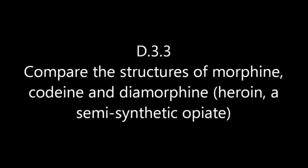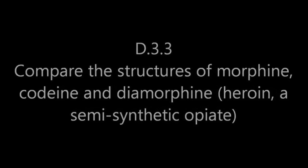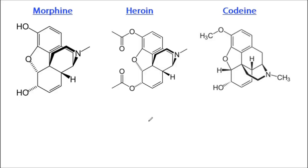You're not expected to learn these three structures — they're in the data booklet. But here they are: morphine, heroin, and codeine.